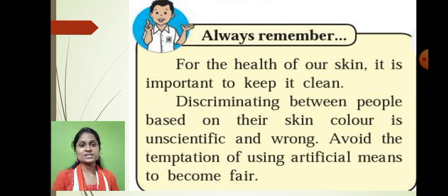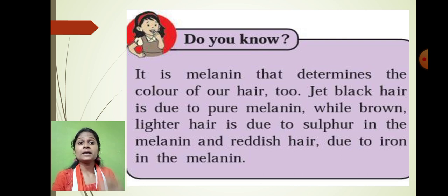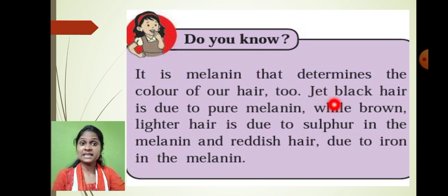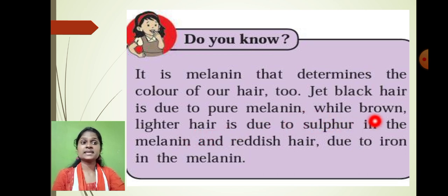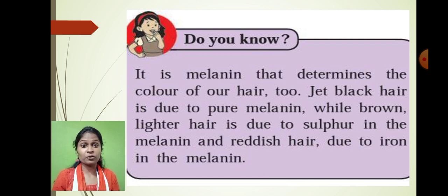Have you noticed that the majority of Indian people have jet black hair color, whereas Africans and Australian people have blonde hair color? Even the hair color is just because of the pigment called melanin. This melanin pigment determines the color of our hair. Suppose if the melanin is more in concentration, then our hair color is jet black. If the melanin is lighter, then the hair color becomes brown. And if sulfur is present in the melanin, then the hair color becomes slightly reddish.